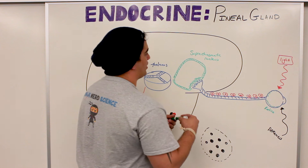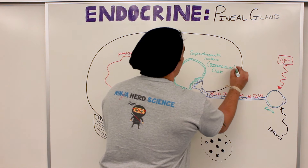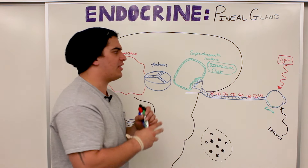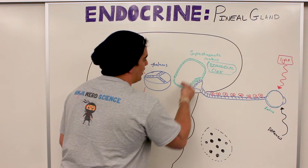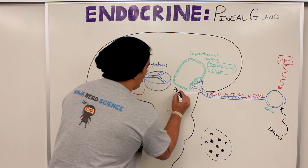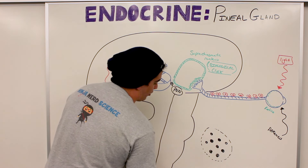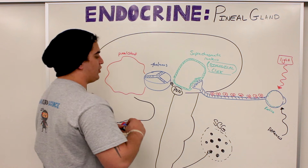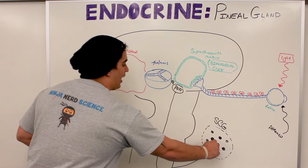The suprachiasmatic nucleus is also referred to as our biological clock. It can regulate a bunch of different activities within our body — our sleeping, our waking, and different biological rhythms. It secretes different chemicals affecting multiple nuclei: the paraventricular nucleus gets a stimulus, which goes down to the lateral gray column, then out to what's called the superior cervical ganglion. The superior cervical ganglion has direct connections to the pineal gland.